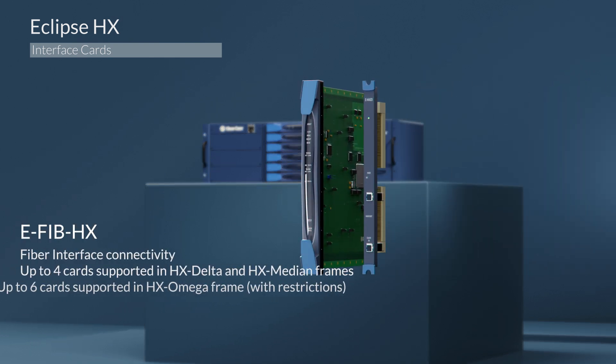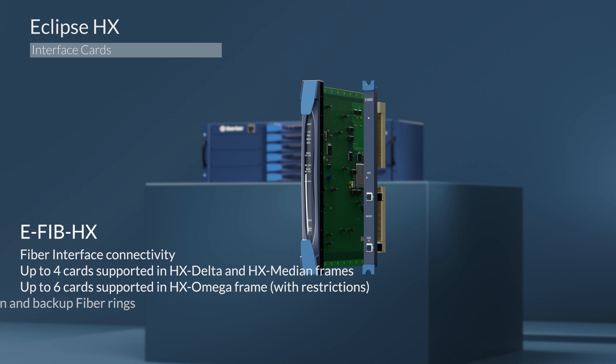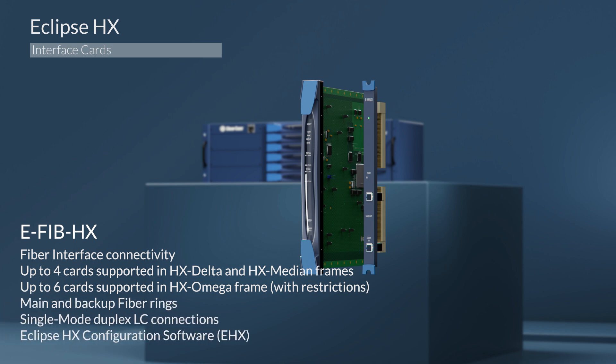Our EFIB is for fiber connectivity for use with all frames. Up to 4 cards are supported on the Delta and Medium frames, and up to 6 cards supported on the Omega. You have both main and backup fiber rings, single duplex LC connections, and is compatible with Eclipse HX configuration software. On the rear of the card, you have two duplex LC terminated fiber optic connections, and each EFIB card uses a port per channel.